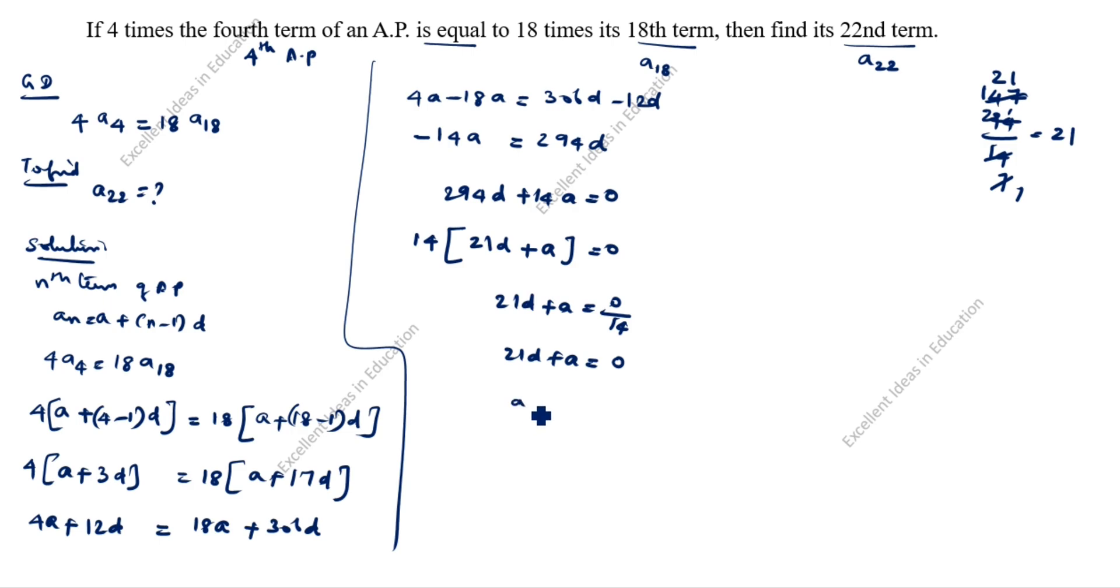This one, how we will write? A plus 21d equal to 0. What is the an formula? An is equal to a plus n minus 1 into d. So, how we will write this one? A plus 22 minus 1 into d is equal to a22. So, n is we will take it as 22, right? What comes? a22 equal to 0. This one we will write it as a22 equal to 0.